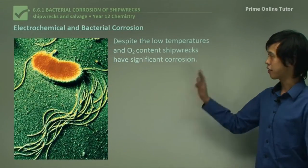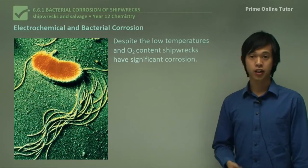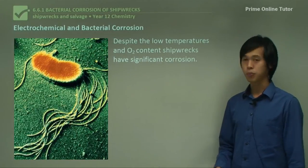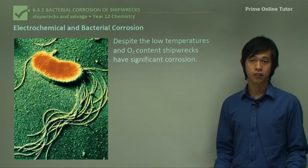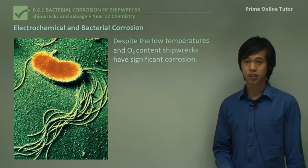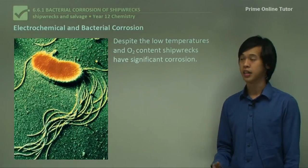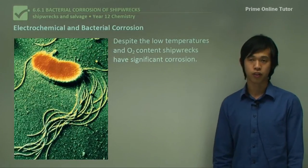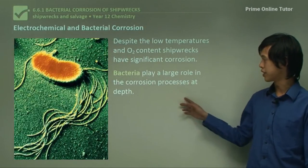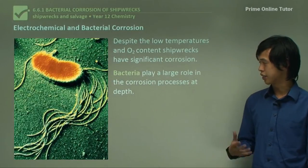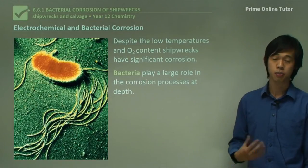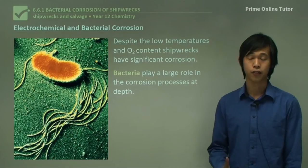Despite the fact that we have low temperatures and low oxygen content in the depth of the ocean, shipwrecks still accumulate a large amount of corrosion. If you've ever seen a shipwreck dragged out of the bottom of the ocean, it's very, very corroded if it's been under the water for a fairly long time. Bacteria plays a large role in the corrosion process at depth — at the depths of the ocean, bacteria is probably one of the main reasons why we still have corrosion.